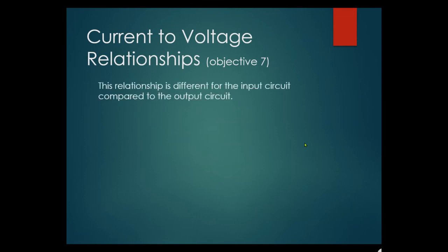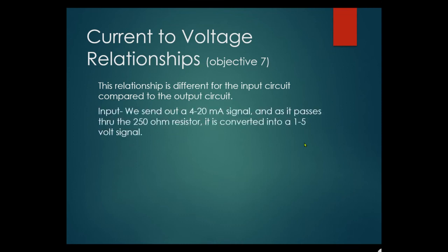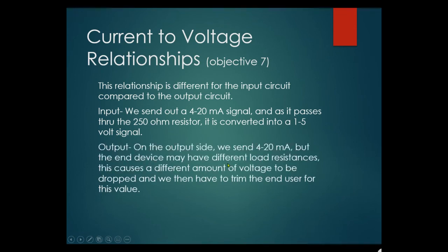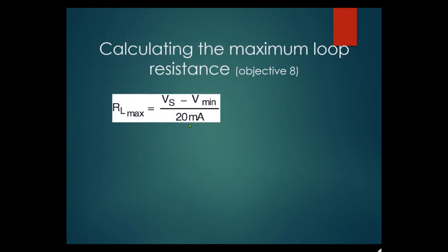Objective seven — current, resistance, and voltage relationships: this relationship differs between the input and output circuits. If a 4 to 20mA signal passes through a 250 ohm resistor, it's converted to 1 to 5 volts. On the output side, the end device may have different load resistances causing different amounts of voltage to be dropped, and you then have to trim the end user for that value. Maximum loop resistance: RL max equals voltage supplied minus voltage minimum, divided by 20mA.